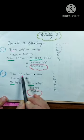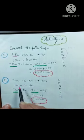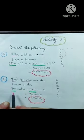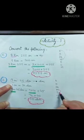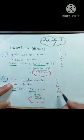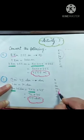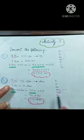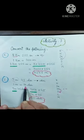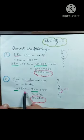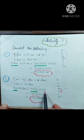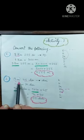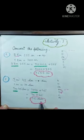7 meters 45 decimeters — convert to decimeters. The 45 decimeters part is already in decimeters. Convert only 7 meters to decimeters. Meter to decimeter is one step down, so multiply by 10. One meter equals ten decimeters. So 7 multiplied by 10 plus 45 equals 70 plus 45 equals 115 decimeters.